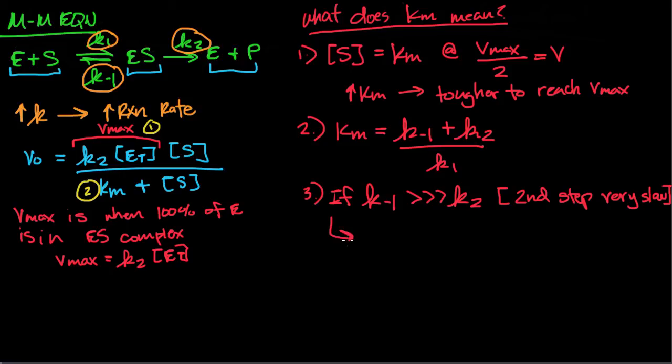What ends up happening is that Km is going to approach K minus 1 over K1, which is your rate of dissociation over your rate of association. In lecture, we called this Ks. It's the equilibrium constant for the dissociation.